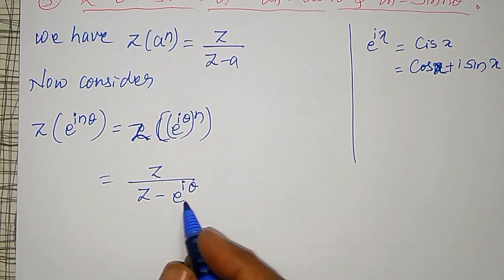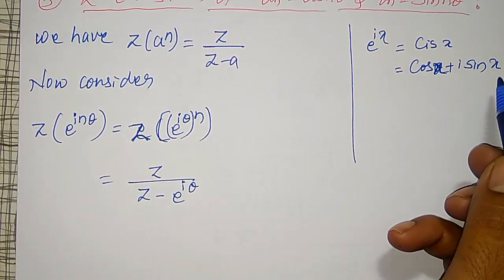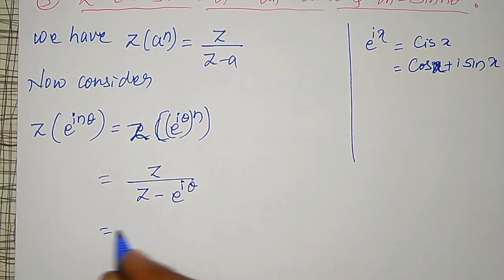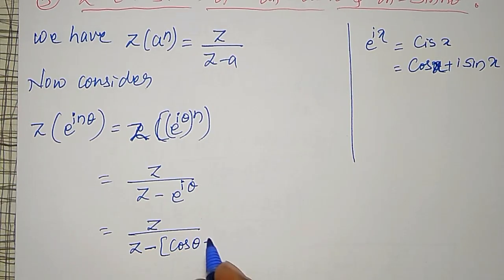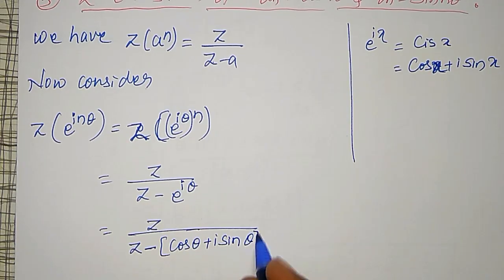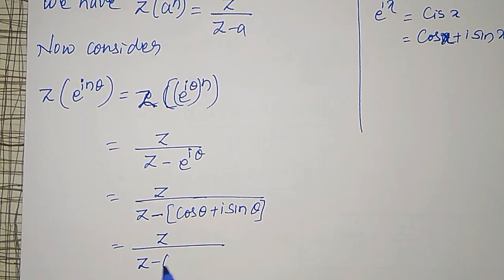But e to the power iθ, according to this property, I can write it as cos(θ) plus i·sin(θ). Therefore it is nothing but Z divided by Z minus cos(θ) plus i·sin(θ), and this minus multiplied inside will become Z divided by Z minus cos(θ) plus, sorry, minus i·sin(θ).